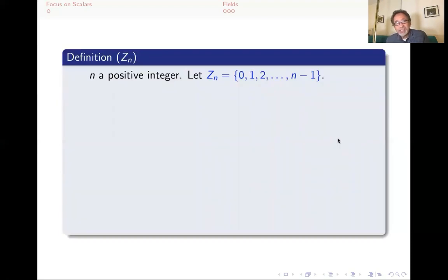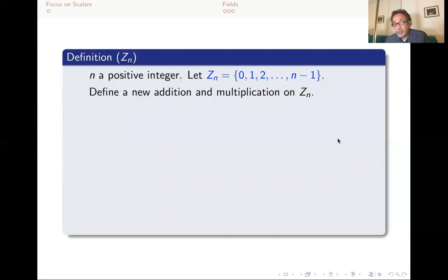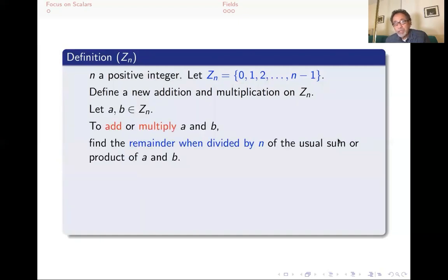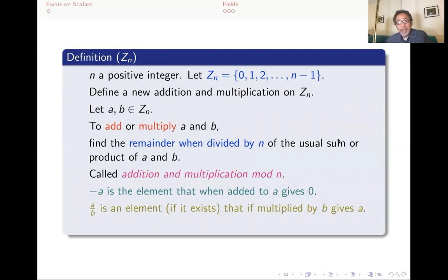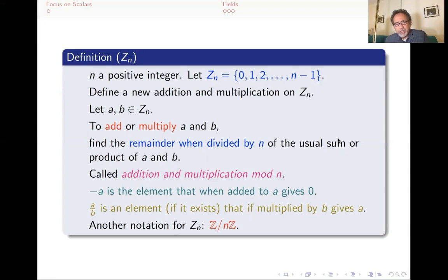A more general definition, not just for 5, but for Zn: if n is a positive integer, then Zn is the integers 0 through n minus 1 — the set with n elements starting at 0 and ending at n minus 1. We define a new addition and multiplication: to add or multiply A and B, you find the remainder when the usual sum or product of A and B is divided by n. You do the usual operation but take out as many n's as you can and keep the remainder, which is between 0 and n minus 1. This is called addition and multiplication mod n. Minus A is the element that when added to A gives 0, and A over B is an element, if it exists, that when multiplied by B gives A. There is also a better notation: Z mod nZ, which is more cumbersome but more meaningful if you take an abstract algebra course.